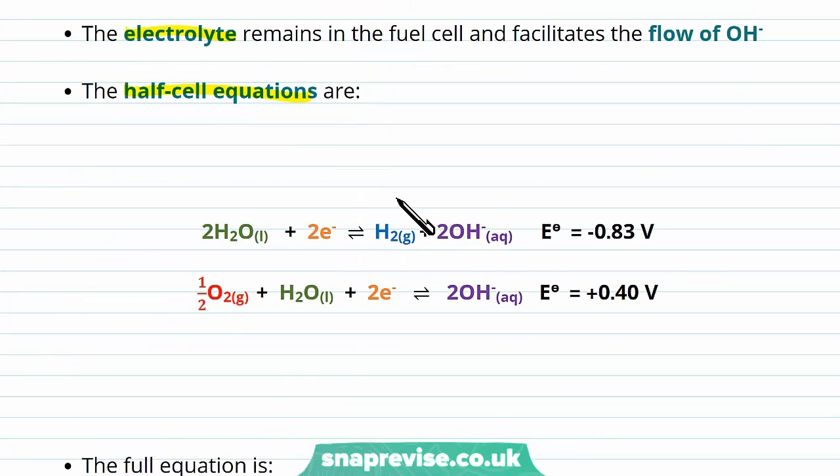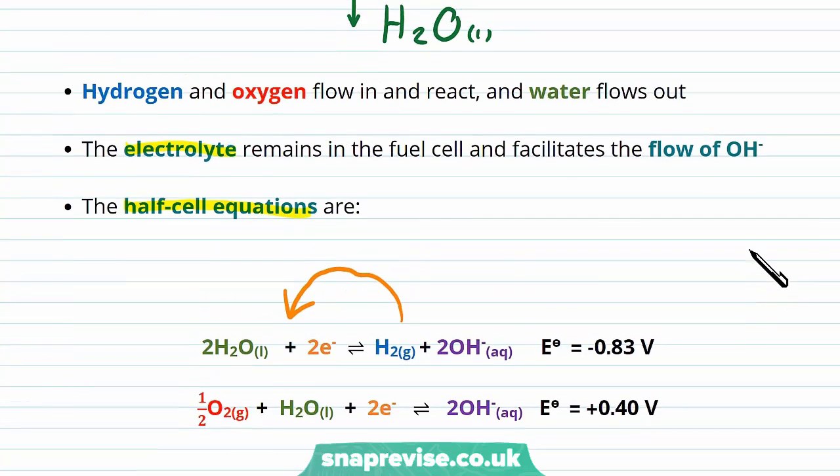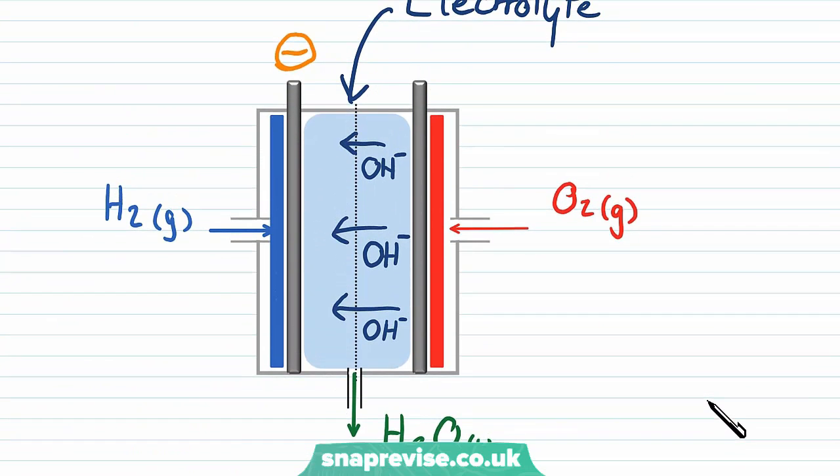and we have hydrogen combining with the OH- that's come across from the oxygen in the electrolyte to form water and two electrons. On the other hand, the oxygen side has a more positive standard electrode potential, so this makes it the positive electrode.